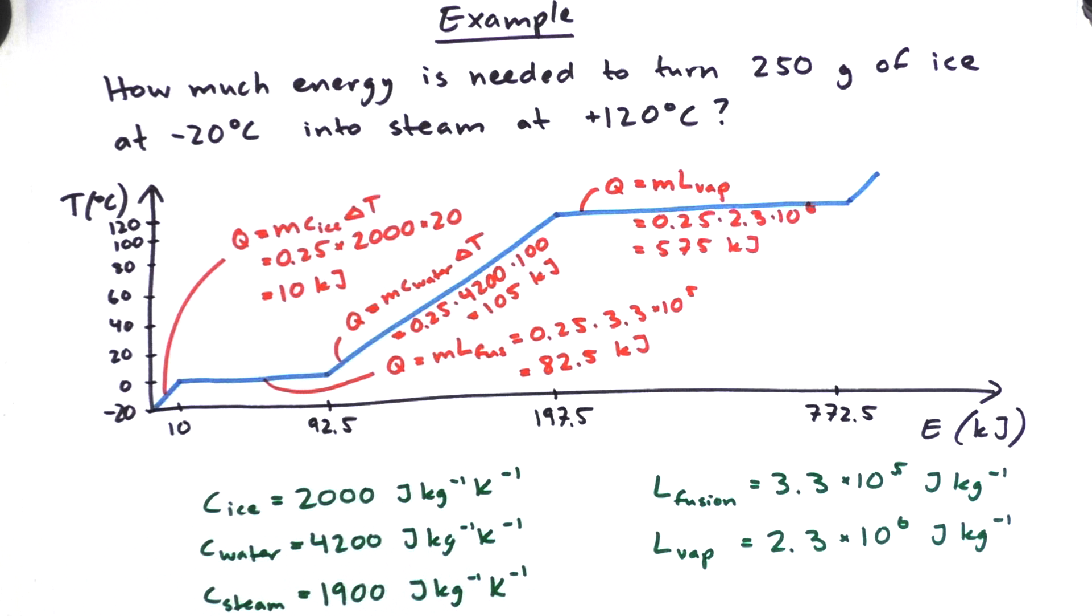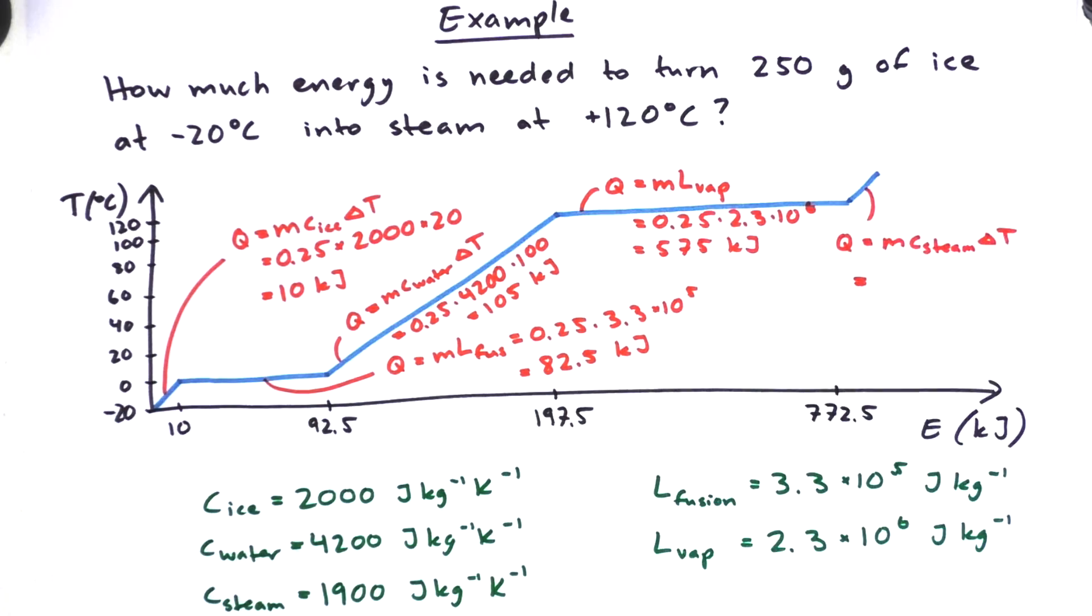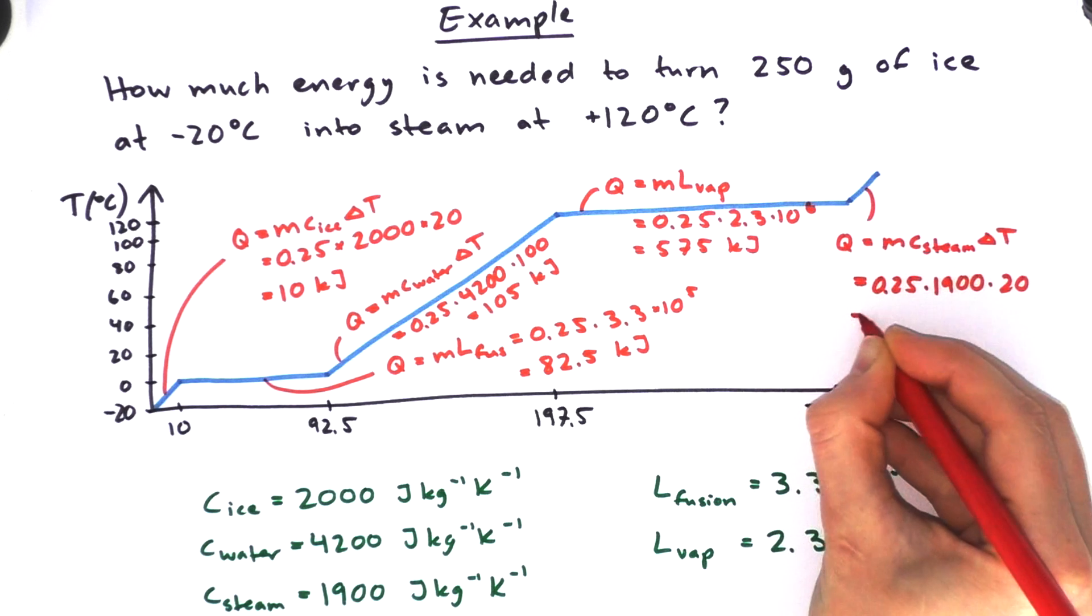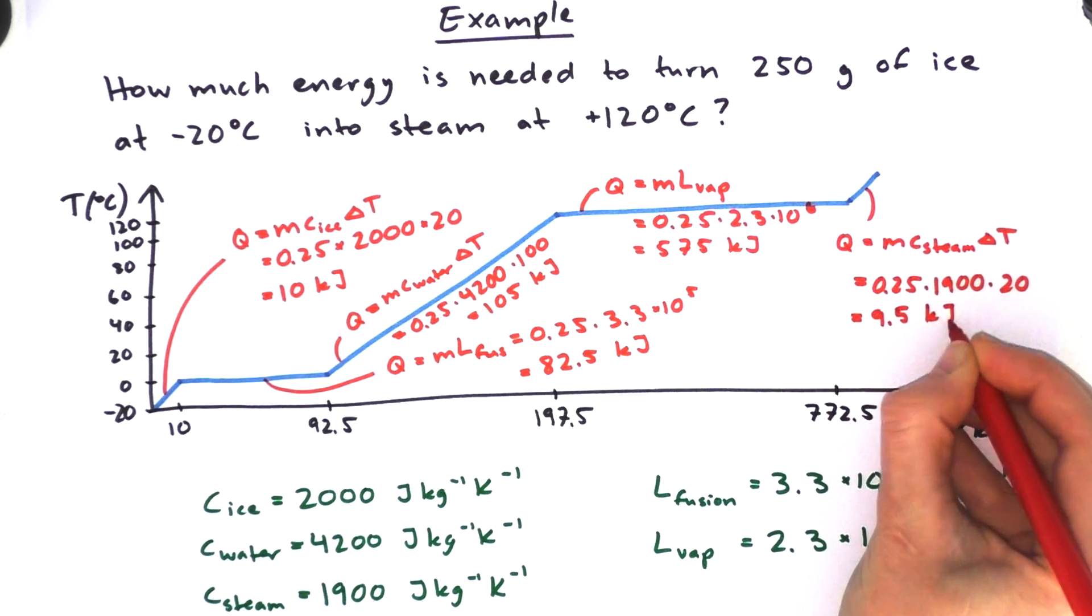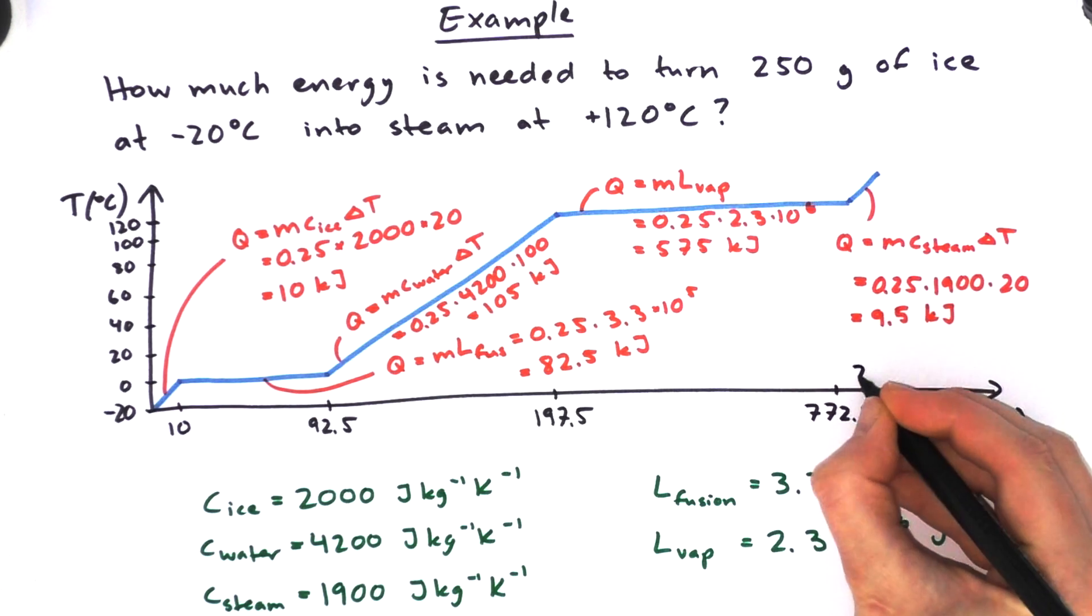And we're going to have to do a little bit at the end as well because we need this steam to be at 120 degrees Celsius. So it probably won't make that big a difference, but let's do it anyway. So we get that Q is MC delta T and it's 20 degrees that we're increasing it by. And that means that we need 9.5 kilojoules. So it's quite small compared to our total so far, but we add it on and we get a grand total of 782 kilojoules.